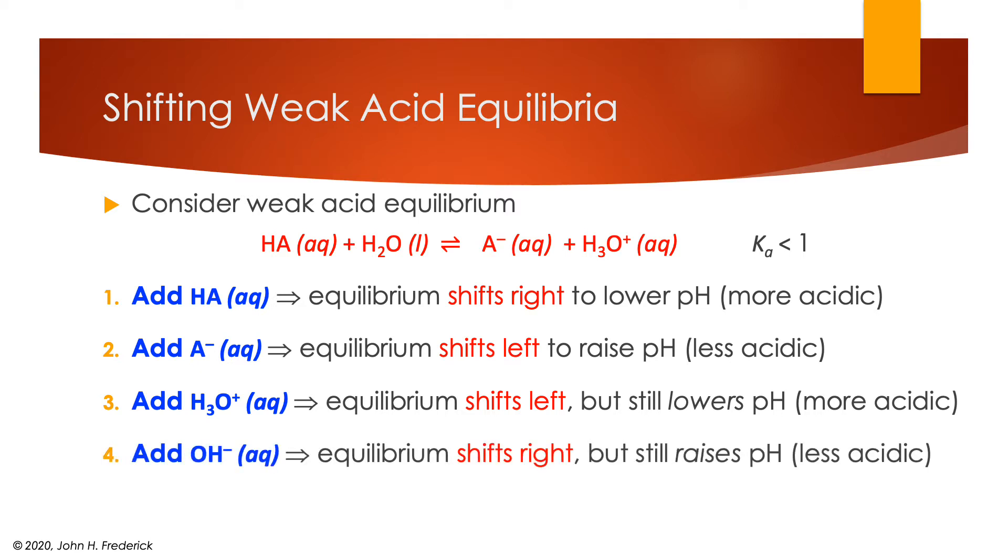If you add hydroxide ion, now that's not part of this equation, but what the hydroxide ion would do is it would react with the hydronium ions and remove them, turning them into water, remove them from the reaction mixture. So in this case, since we've removed one of the products, the equilibrium will shift to the right, but we've added hydroxide to do it, so it still raises the pH.